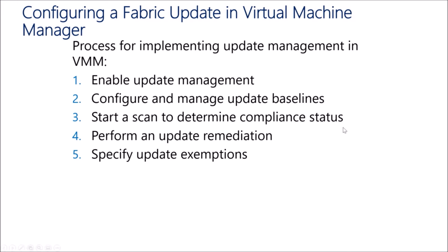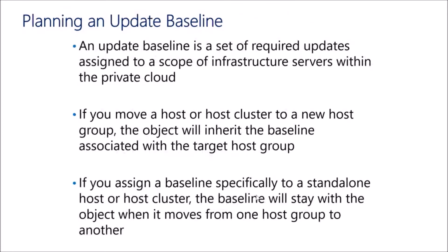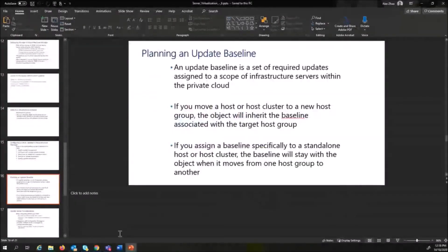We can also specify update exemptions — if an update doesn't apply or causes problems, we can exempt it from baselines, though that would be rare. An update baseline is a set of required updates assigned to a scope. The scope defines what receives this baseline — just like applying group policies to OUs. For example, if it's a Hyper-V-only baseline, there's no point including storage servers or the WSUS or SQL server in that scope.